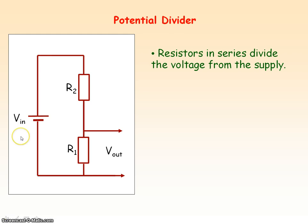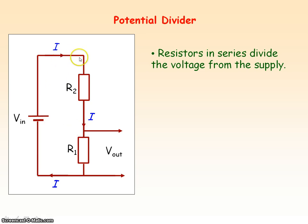The current in the circuit is in a clockwise direction. Remember, it flows from the positive terminal to the negative terminal, and remember current is the same in series, so you've got current I through resistor R2 and resistor R1.